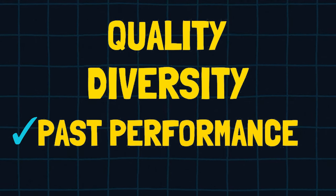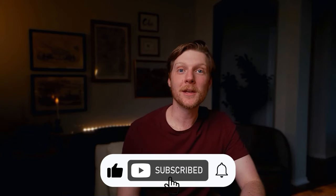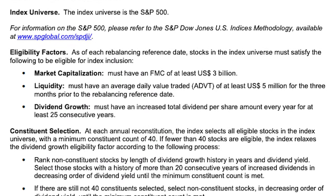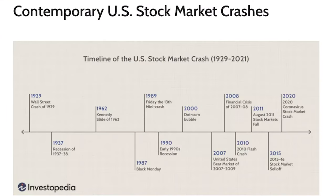The final dividend growth ETF destroys the previous three on all three of my criteria. This ETF has a solid dividend yield of over 2% and tracks the S&P 500 Dividend Aristocrats Index, which only allows companies that have increased their dividend every year for 25 consecutive years. This isn't as strong as the 50-plus years from the Dividend Monarchs, but 25 years is still a lot. Companies in the Dividend Aristocrats managed to survive the dot-com bubble, the financial crisis of 2008, and the COVID-19 crash of 2020.